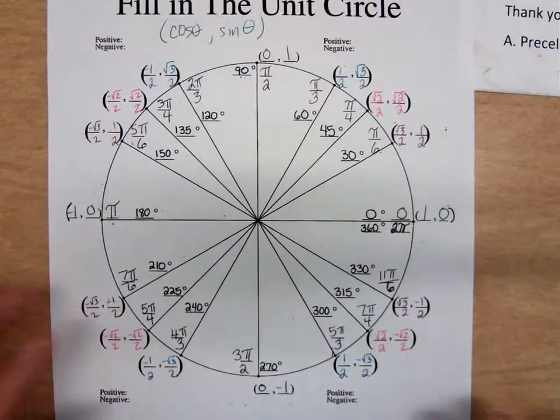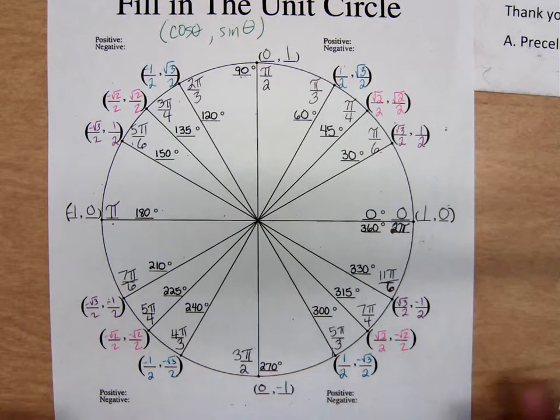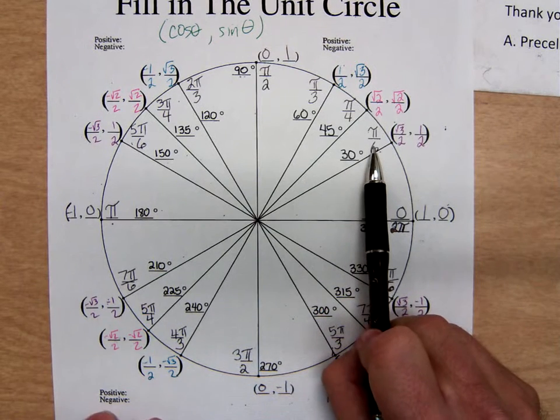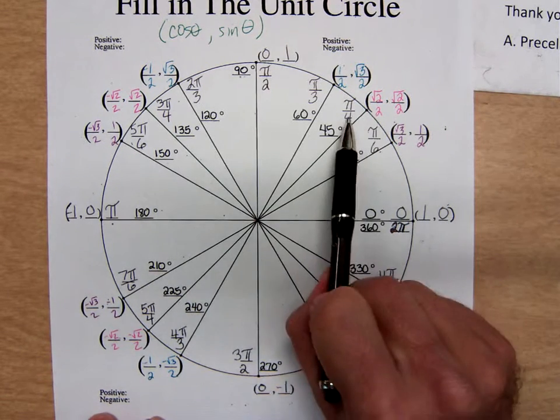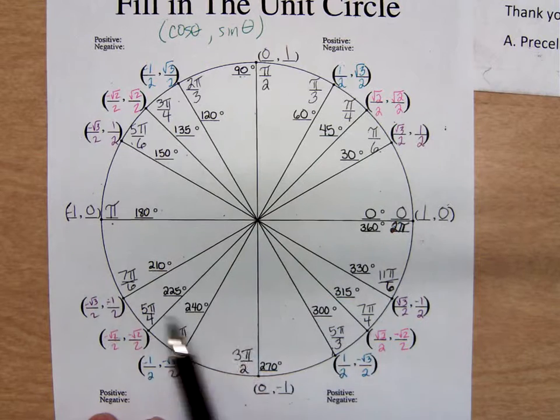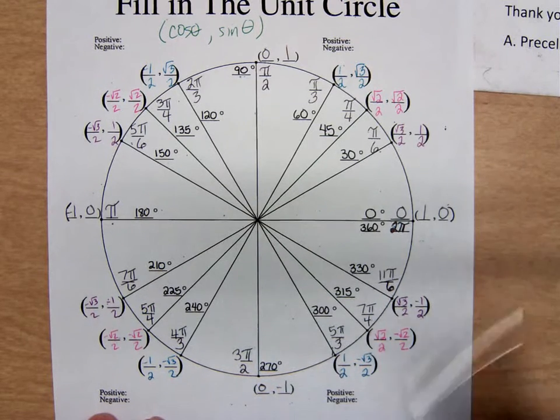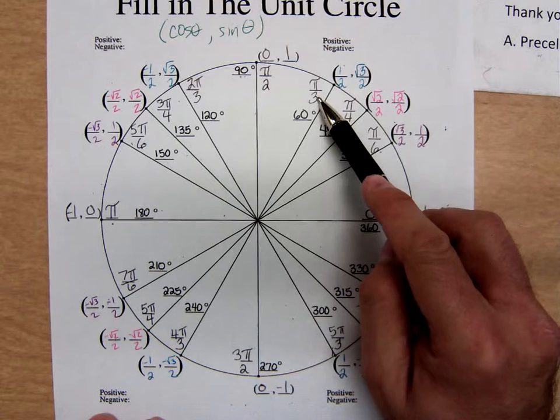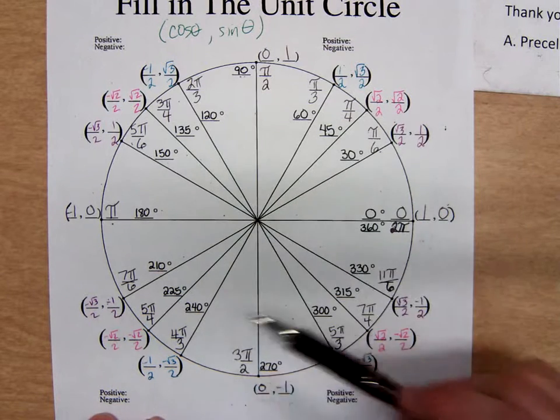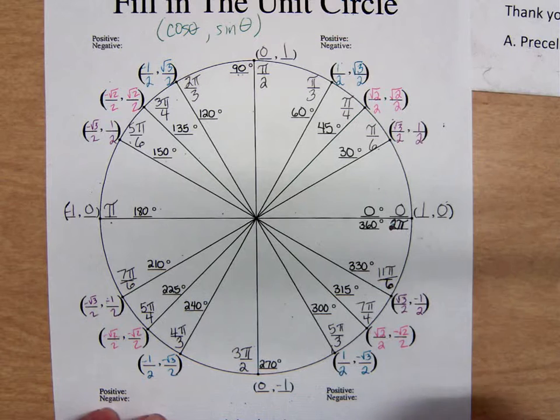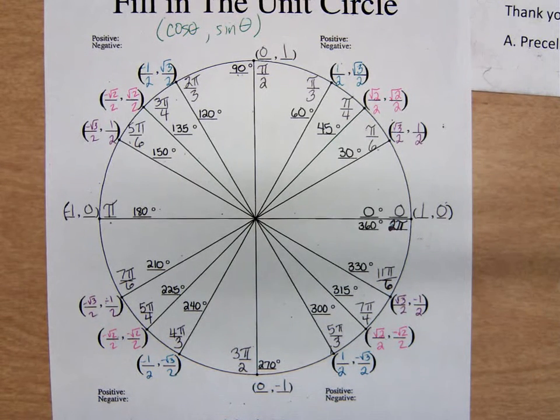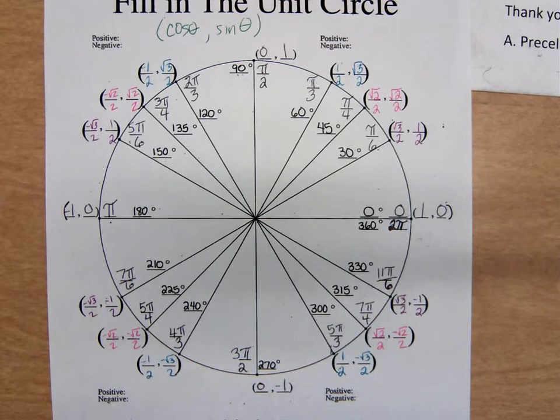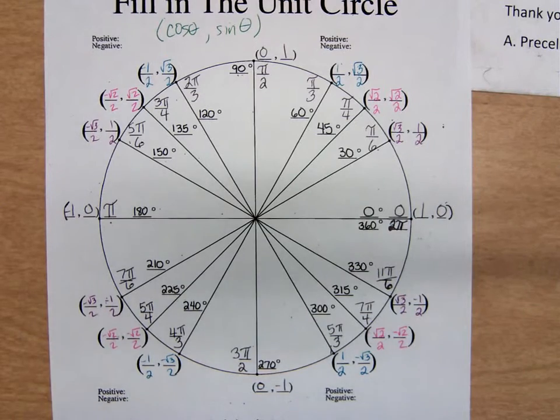Now, notice, with the radian measures, all the reference angles, we can refer to as the over 6 angles. There's four of them with the over 6. There's four of them with the over 4. Those are the ones that end in 5 degrees. The four that are closest to the y-axis. Those are the over 3 ones. Okay? So, I gave you another blank one of these so you can practice filling it in. And it's posted under document sharing.